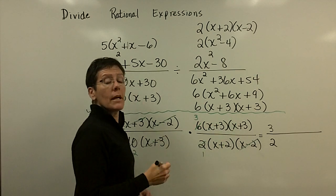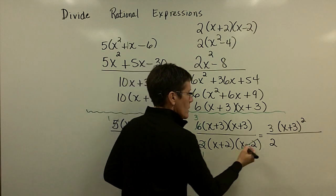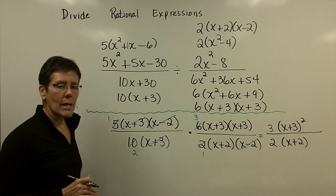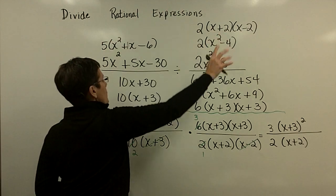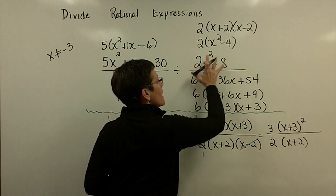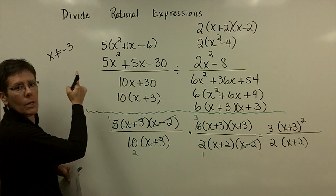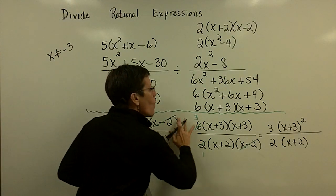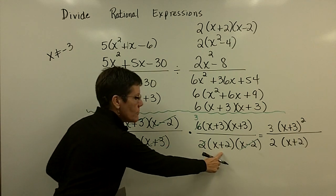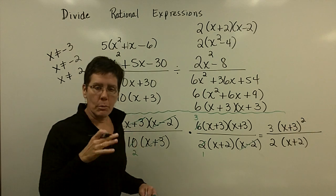As binomials go, x plus three times x plus three can be written as x plus three quantity squared — saves space. Down here I have x plus two. Now for the domain restrictions: in the original problem, x cannot equal negative three. When multiplying by the reciprocal, I also have to pay attention to those denominators: x cannot equal negative two, and x cannot equal positive two.